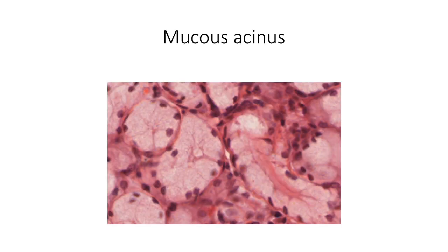Mucous acini are usually tubular in shape. Mucous cells lining these acini are cylindrical in shape with a flattened nucleus at the base. The apical cytoplasm is filled with large pale-staining secretory droplets containing mucin. These mucinogen granules at the apical region are usually lost during preparation of H&E stained sections, making the apical region of these cells appear almost empty.